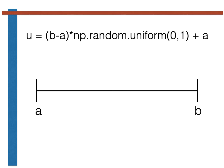The reason for this is that if np.random.uniform(0,1) returns 0, then u will be set equal to a.